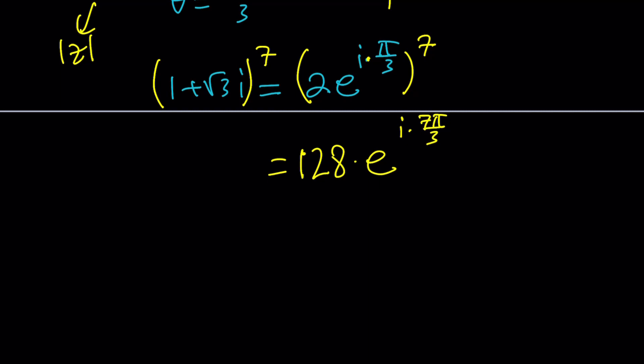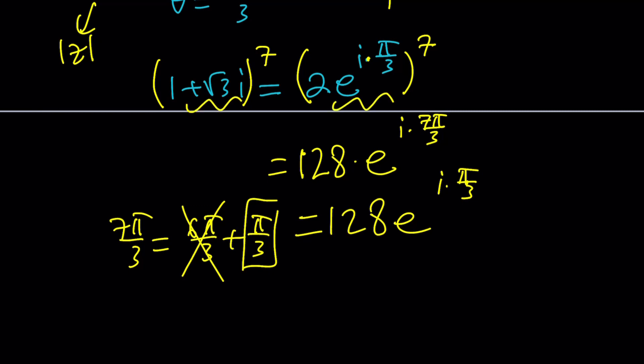And then from this, we're going to get E to the power I times seven pi over three. Now, how do you simplify seven pi over three? Well, first of all, seven pi over three is six pi over three plus pi over three. Therefore, this is two pi. We can totally forget about it and just use pi over three. So this is the same as 128 times E to the power I times pi over three.